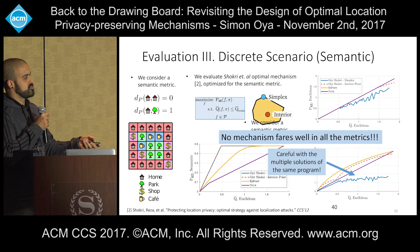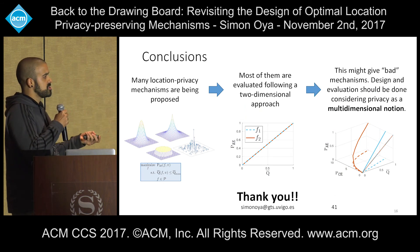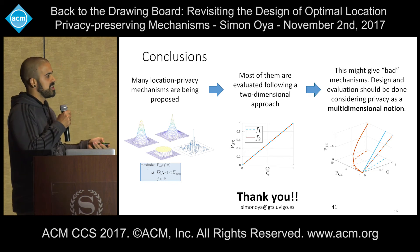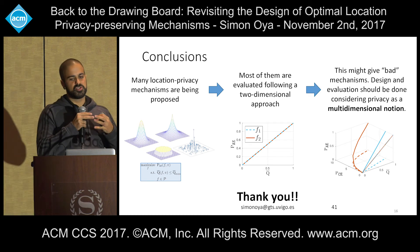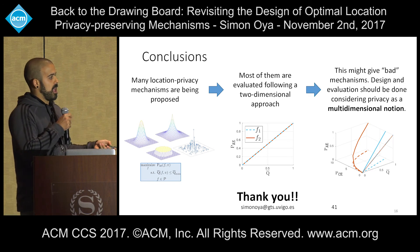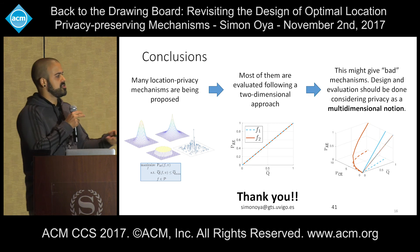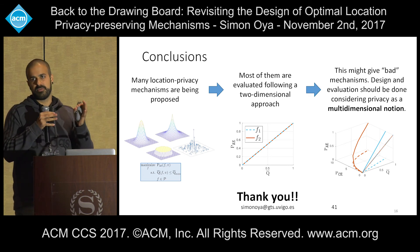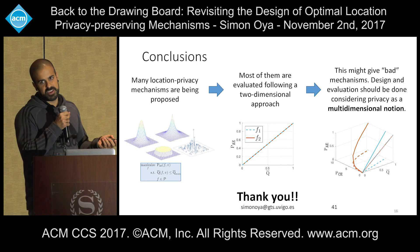To conclude, there are many location privacy mechanisms being proposed, and most of them, even though designed with different privacy objectives in mind, are evaluated using a two-dimensional approach — normally just comparing average error versus average loss. What we say here is that privacy should be seen as a multi-dimensional notion to avoid bad mechanisms. We proposed two additional metrics here, but there could be others, and the dimensionality depends on the problem. It is very dangerous to judge a mechanism based solely on average performance, because it could be optimal on average while being awful in each single realization. Thank you.